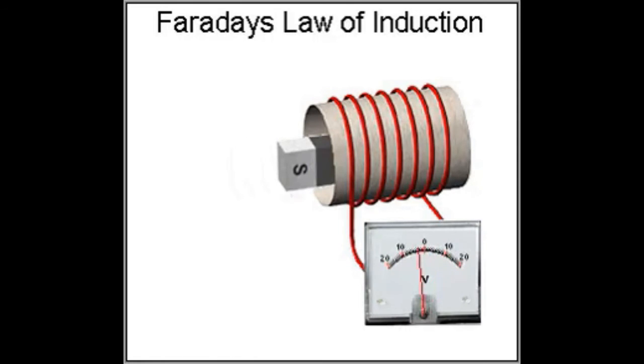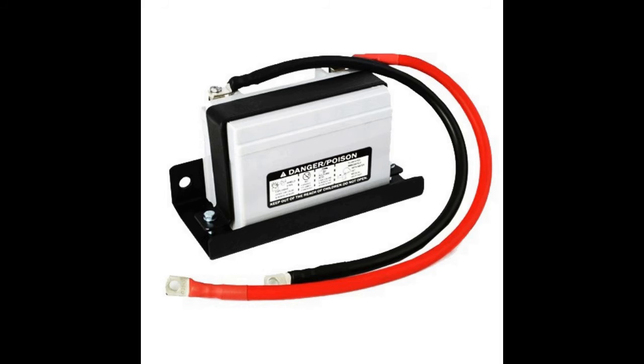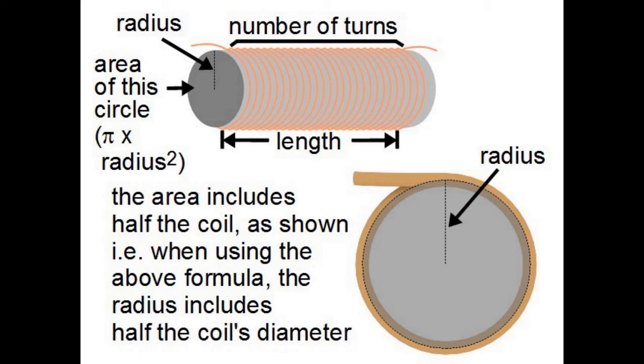This induced EMF in the coil is further stored in battery. While manufacturing moving coil, the air gap should be minimum to reduce the eddy current and hysteresis losses.